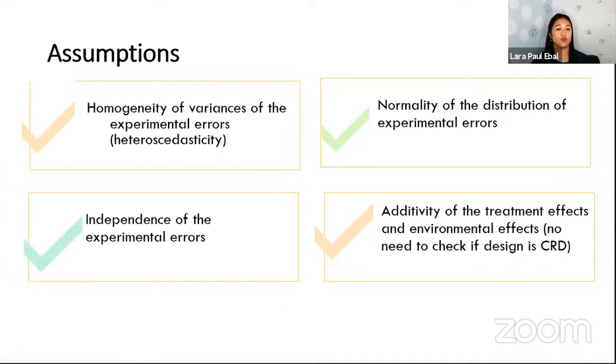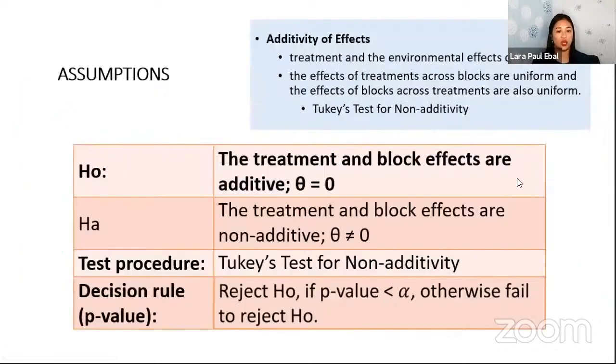So again, we have to check first the assumptions before we proceed with the test. Assumptions on this: Last time we discussed homogeneity of variances, the normality of errors, and then independence. Now, another additional assumption that we need to consider, or we need to actually check, is the additivity of these treatment effects. So this is very important. You cannot proceed with the RCBD or the analysis for the RCBD if this assumption is not satisfied.